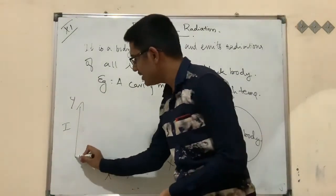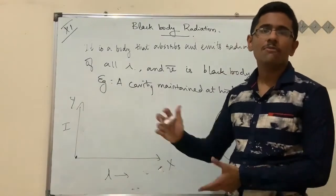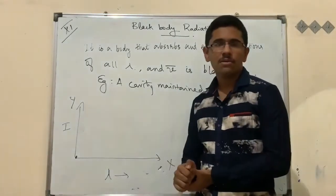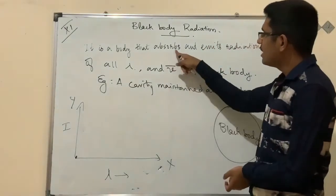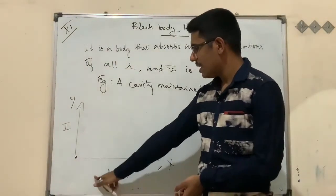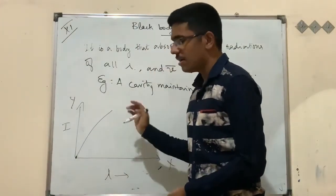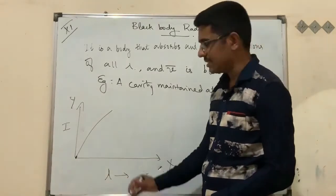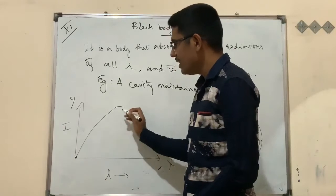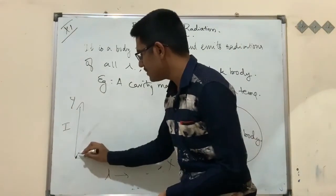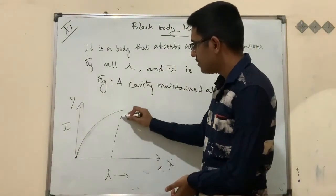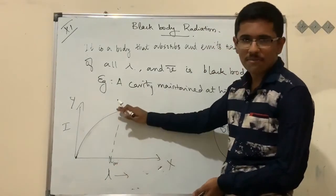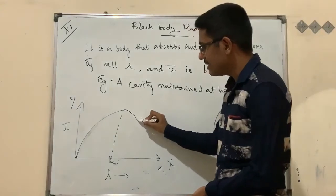When intensity is zero, there is no emission of radiation — the black body does not absorb or emit any wavelength. On increasing the intensity, the wavelength increases in a non-linear fashion. After a particular maximum wavelength (lambda max), on further increasing intensity, the temperature actually decreases.